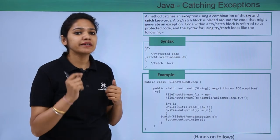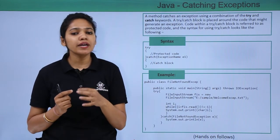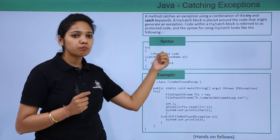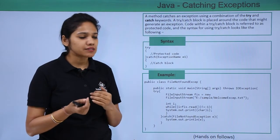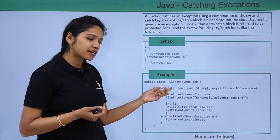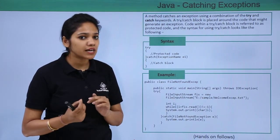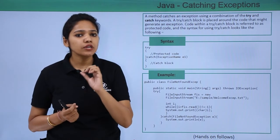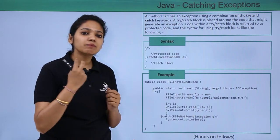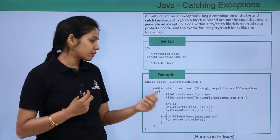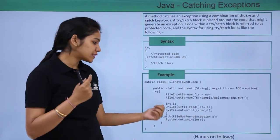Immediately after a try block you need to write a catch block. In the catch block you provide what kind of exception may occur in that particular code, along with the message you would want to pass. The try-catch block is most important because it tells you where the error occurred and which block of statements will handle the exception — those are your exception handlers.